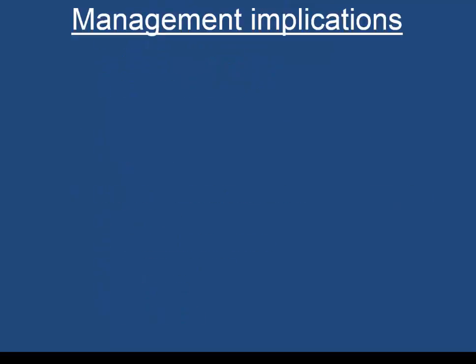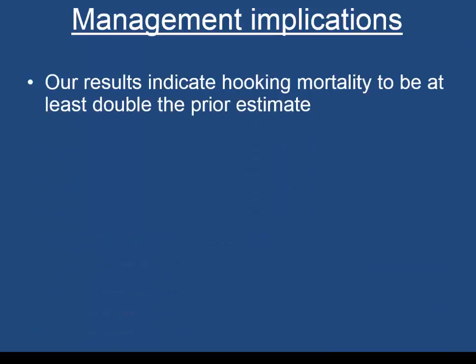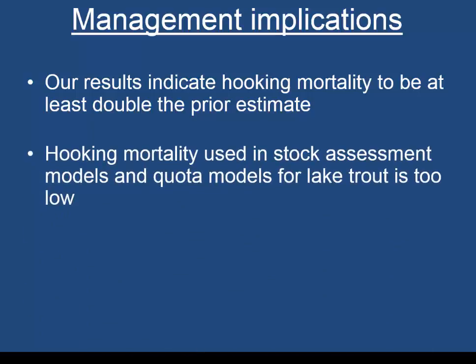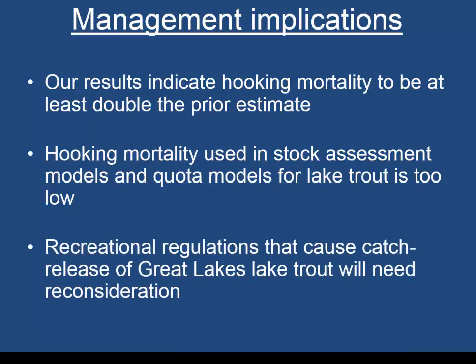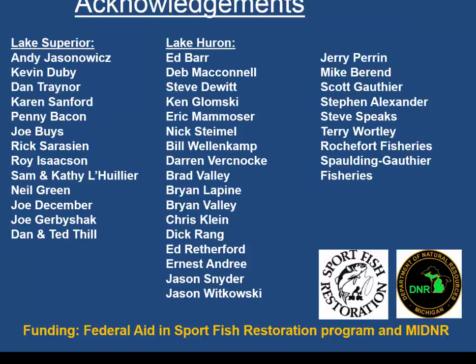Management implications: our results indicate hooking mortality is at least double the prior 1980s estimate. The values used in stock assessment models and quota models are likely too low and need adjustment. Recreational regulations that cause catch-and-release of Great Lakes lake trout will need reconsideration. I'd like to thank everyone shown here, the Michigan DNR, and the Sport Fish Restoration Project. I'd be glad to answer any questions.